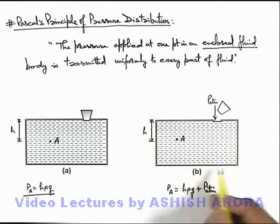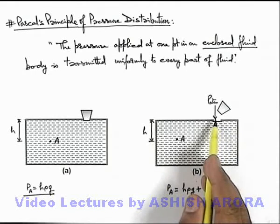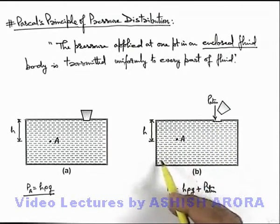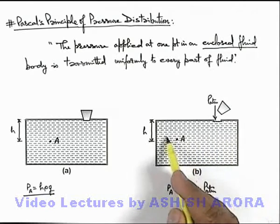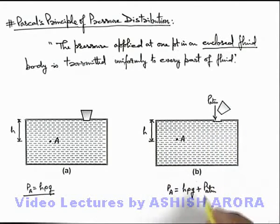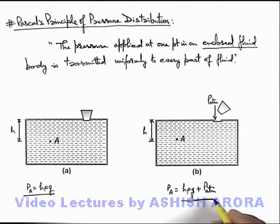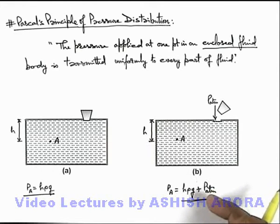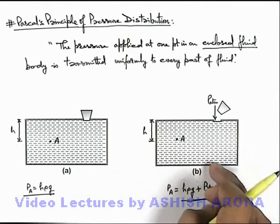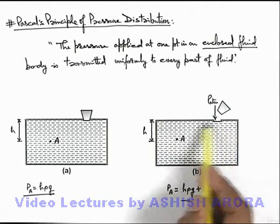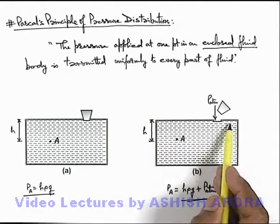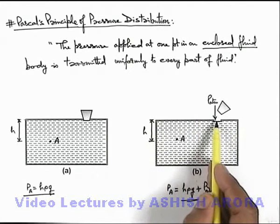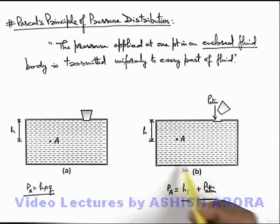If at any one point in an enclosed fluid an external pressure is applied, at every point in the fluid body the pressure will be increased by the same amount. So the new pressure will be h·ρ·g + P_atmospheric. It is not necessary that the whole top layer of liquid should be exposed to atmosphere to increase the pressure — even if it is applied at one point, it is distributed throughout the volume.